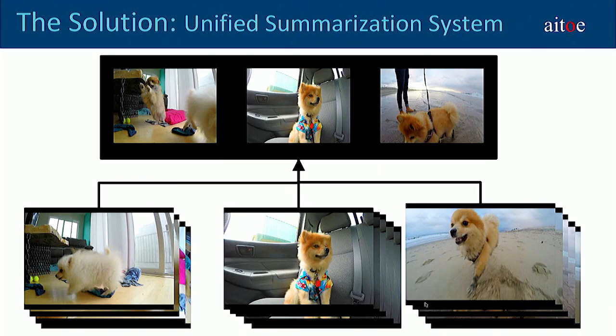To solve this problem, we've built a unified summarization system. It tries to capture diverse and representative content in order to create a visual summary of any long video in a matter of minutes. We also do summarization on the entity level — such as objects, people, and faces — not only on the frames.